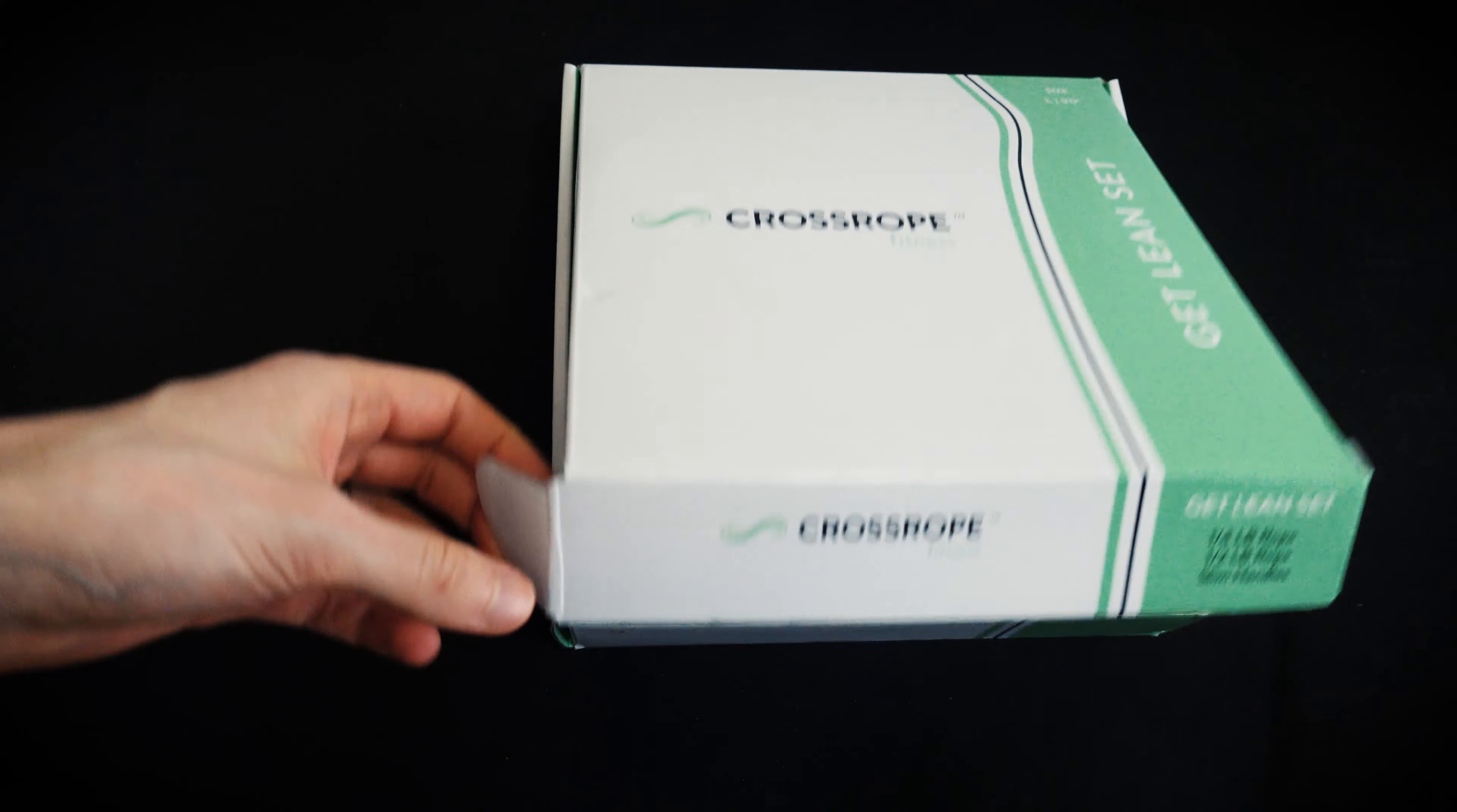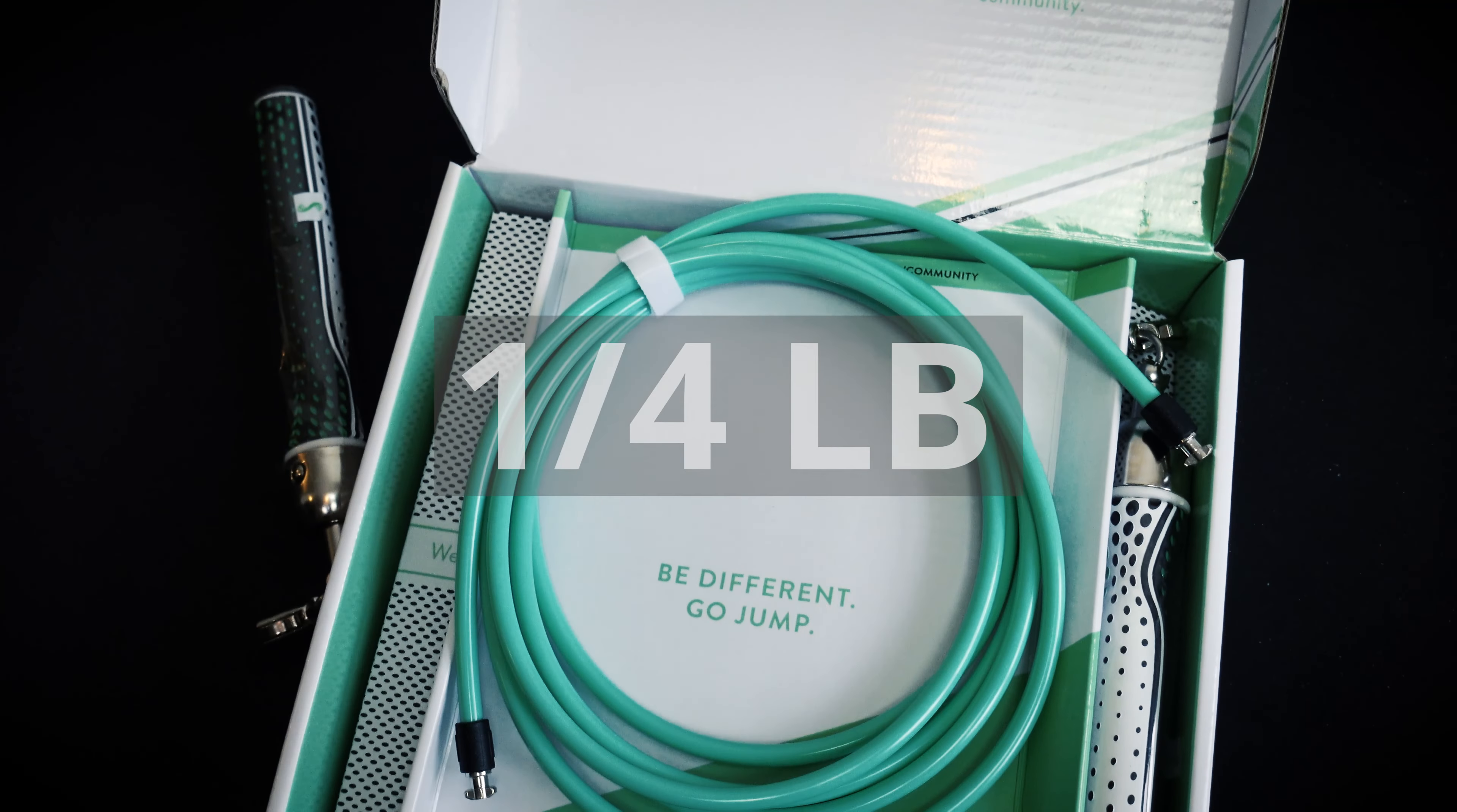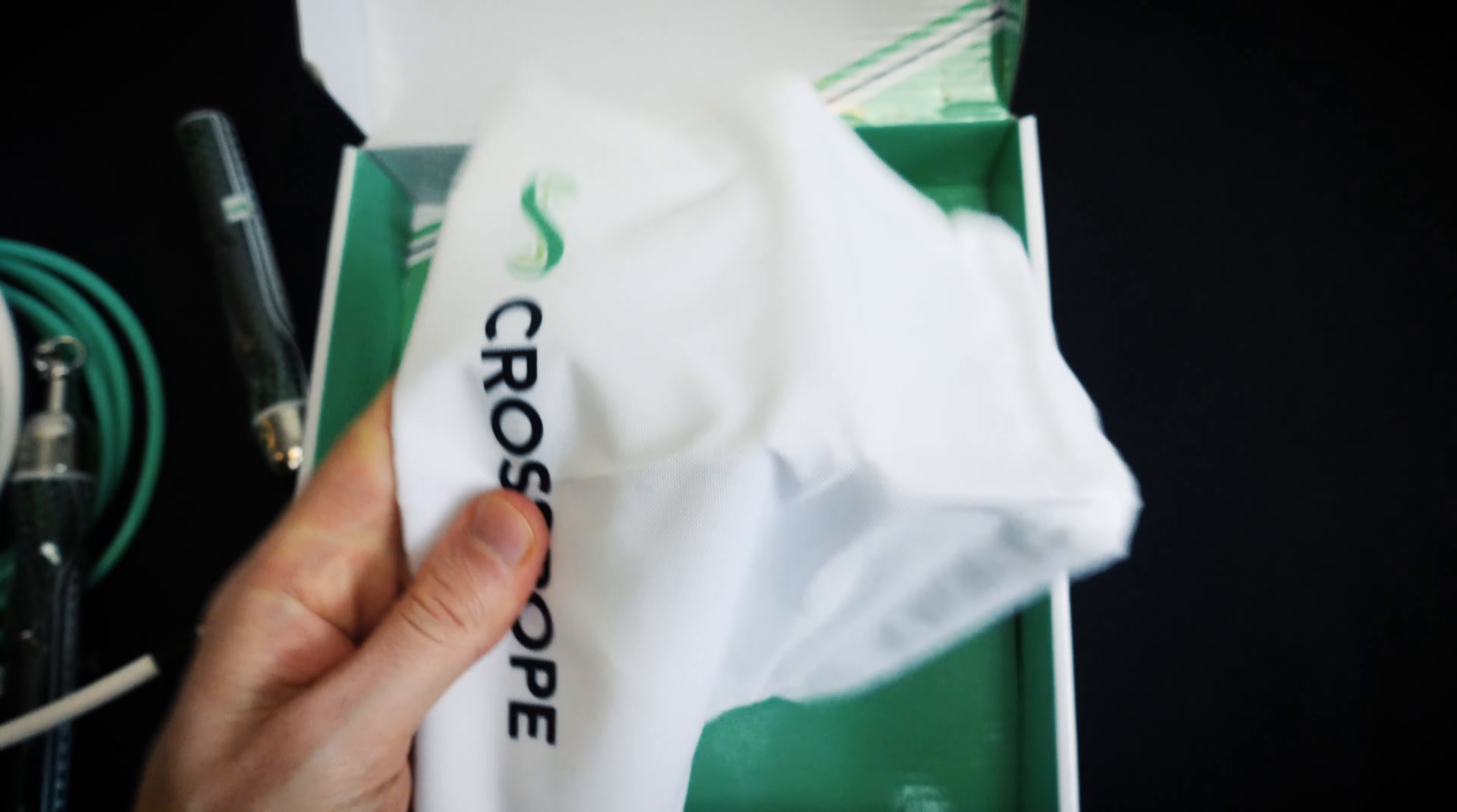As mentioned before, I am far from an experienced jumper, so I figured starting out light might be a good idea. This is why I opted for the Get Lean bundle. Within this particular bundle, the first rope weighs in at a mere quarter pound and the second is a half pound, all of which fit into this nice provided travel bag.